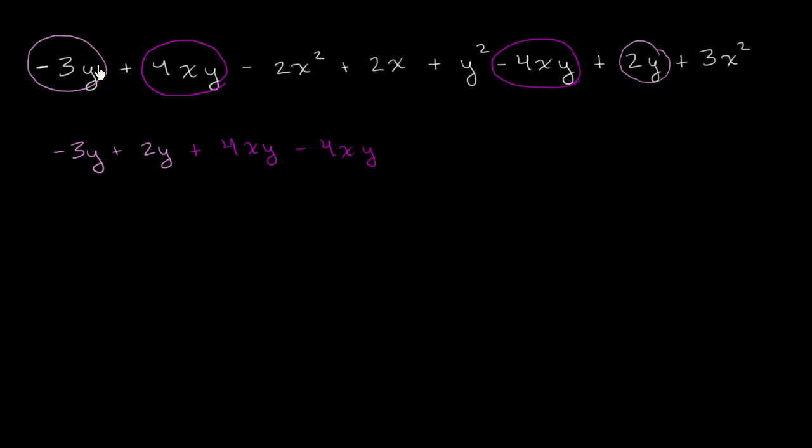Then let's go to the x squared terms. I have minus 2x squared. Do I have any other x squareds? Yes, I do. I have this 3x squared right over there. So plus 3x squared.